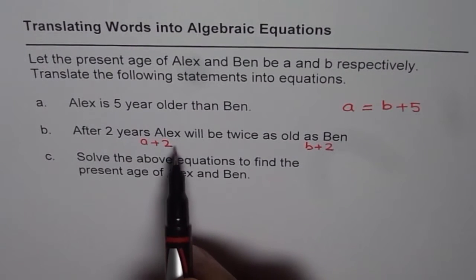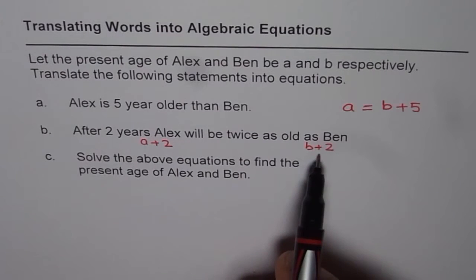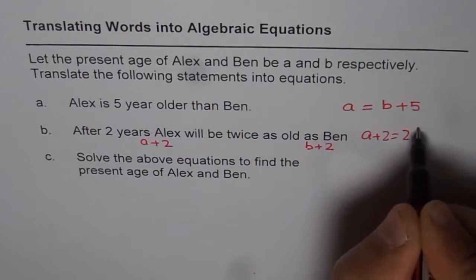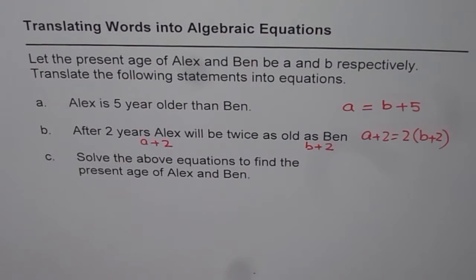That says, after 2 years, Alex will be twice as old. That means this is 2 times this. So what we get here is A plus 2 equals to 2 times B plus 2. So that is the second equation. It is kind of tricky.